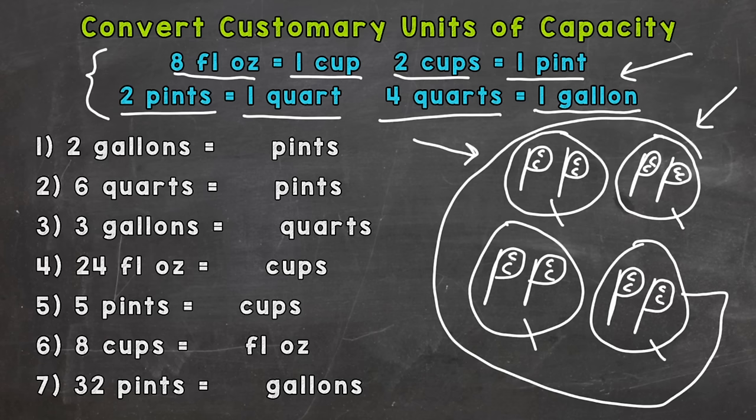Number one: two gallons equals how many pints. The first thing we need to do is figure out how many pints in one gallon. We have eight pints in one gallon, so that means there's 16 pints in two gallons. Two times eight.